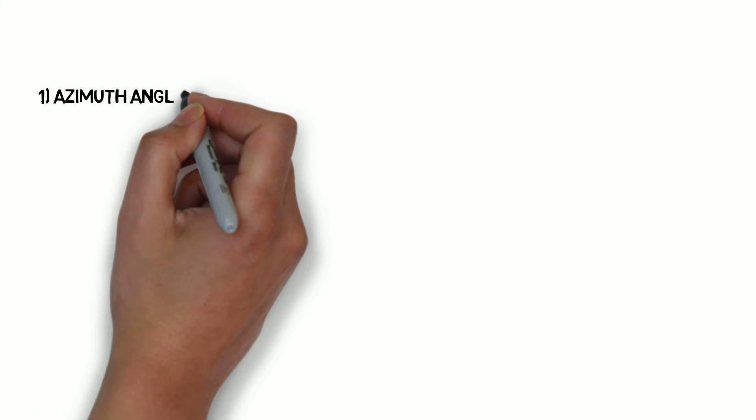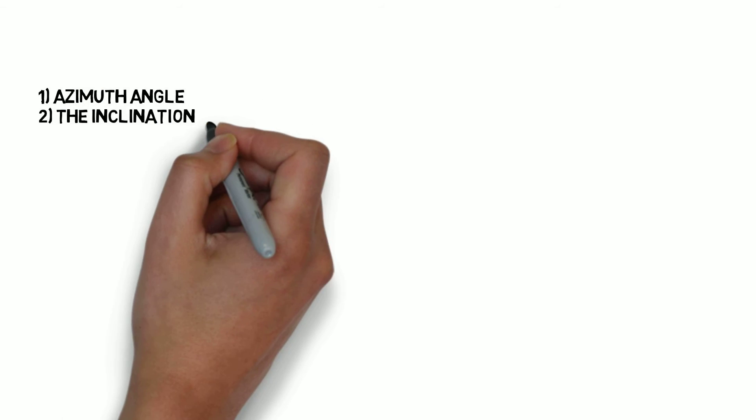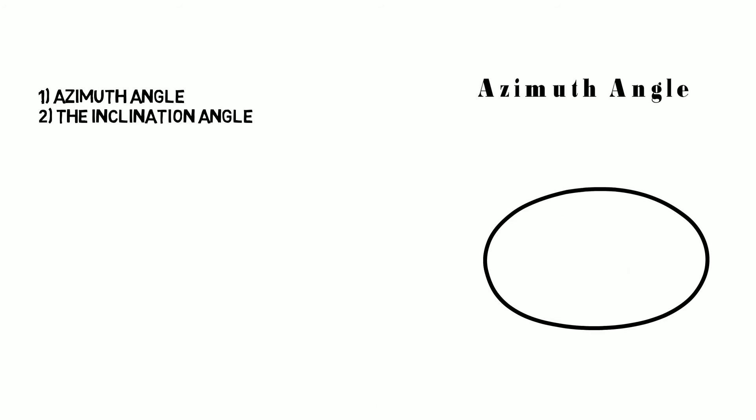First, we define two terms: number one, the azimuth angle, and number two, the inclination angle. The azimuth angle refers to the orientation with respect to the geographical south, or in other words, it is the angle measured clockwise from due south direction.